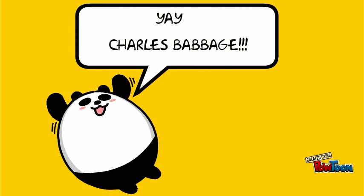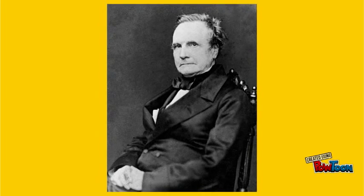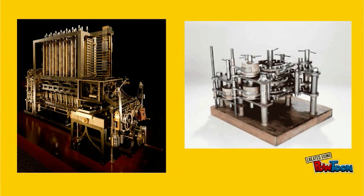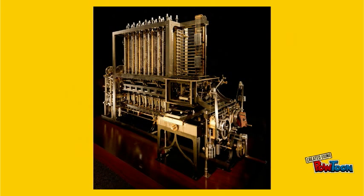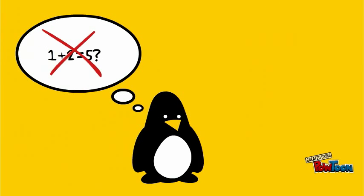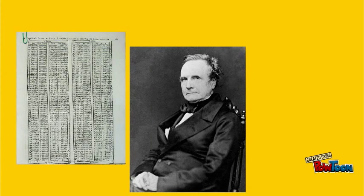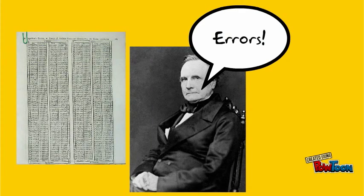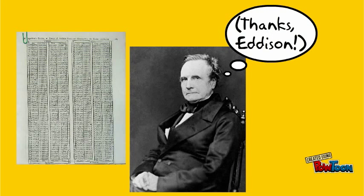Charles Babbage was an inventor in the 19th century who developed a large variety of machines intended to assist the general public in various ways. He is typically remembered for his calculating engines, most notably for what is called the Difference Engine No. 2. The engines were primitive computers capable of performing mathematical calculations via mechanical means in order to remove the high level of human error from calculations. The reference tables that Babbage was able to mechanically correct were still in use as standard reference material as late as the early 1900s.